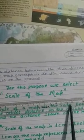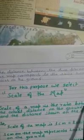This is the scale that we can use here also on the map work. Scale of a map is the ratio between the actual distance on the ground and the distance shown on the map.